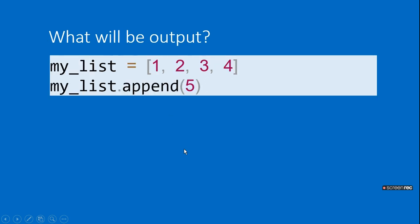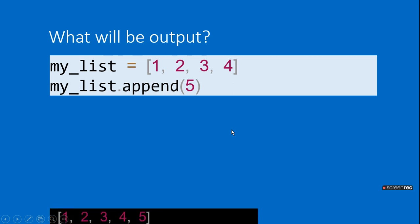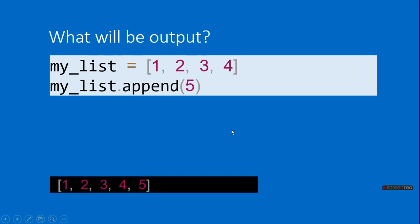What will be the output of list [1, 2, 3, 4] when you append the value 5? Append means addition, so when you add 5 the list will become [1, 2, 3, 4, 5].